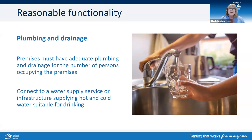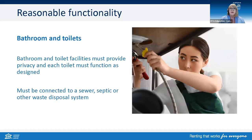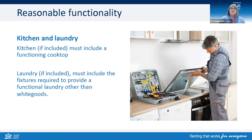When we talk about reasonable functionality, the premises must have adequate plumbing and drainage for the number of persons occupying the premises, and be connected to a water supply service or infrastructure supplying hot and cold water suitable for drinking. The bathroom and toilet facilities must provide privacy and function as designed, and must be connected to a sewer, septic or other waste disposal system. If included, the kitchen must include a functioning cooktop, and the laundry must include fixtures required to provide a functional laundry.